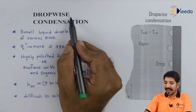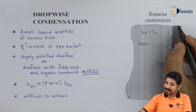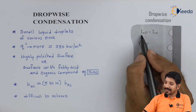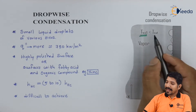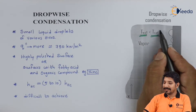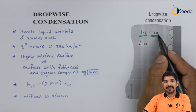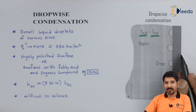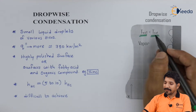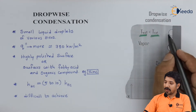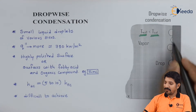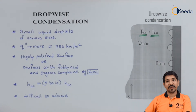In case of drop-wise condensation, consider a small wall whose temperature is T_w, and we have made sure that T_w is less than T_saturated. T_saturated is the saturation temperature for a given vapor which is present around the wall. In drop-wise condensation, a small drop will be formed over the surface of a given wall.